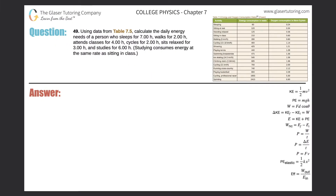Number 49. Using data from table 7.5, calculate the daily energy needs of a person who sleeps for seven hours, walks for two hours, attends classes for four hours, cycles for two hours, sits relaxed for three hours, and studies for six hours.